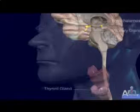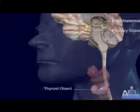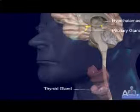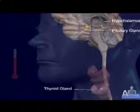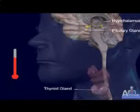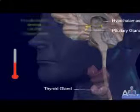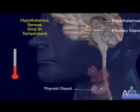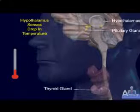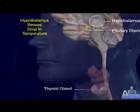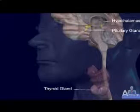The thyroid gland is dependent on both the hypothalamus and the pituitary gland for its regulation. For example, when the hypothalamus senses a drop in the ambient temperature, it stimulates the release of thyrotropin-releasing hormone, which acts on the pituitary.